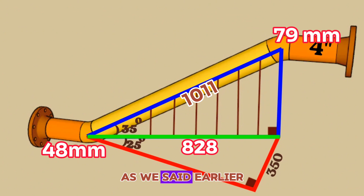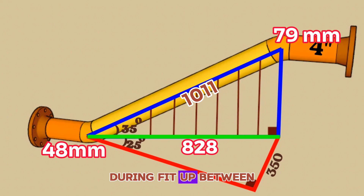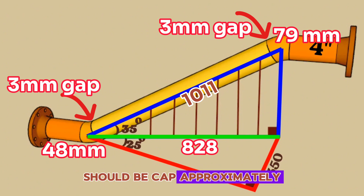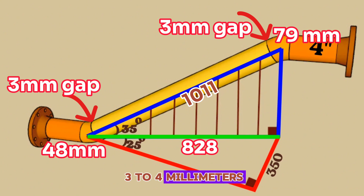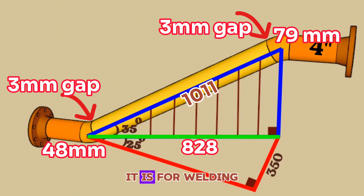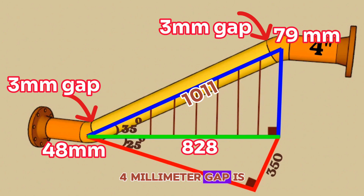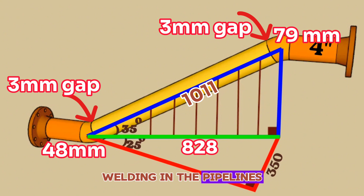As we said earlier in the video, during fit-up, between pipe fittings there should be a gap of approximately 3 to 4 millimeters for welding. Having this 3–4 millimeter gap is for better root welding in the pipelines.